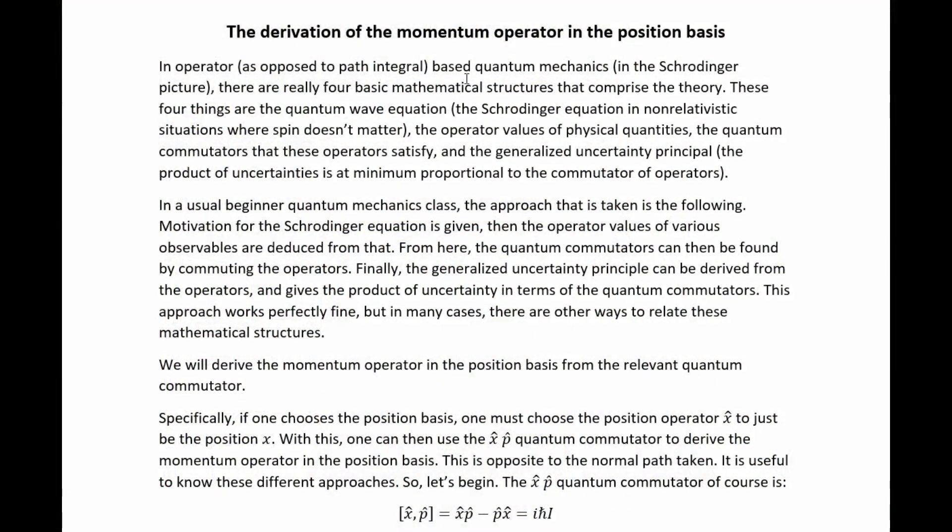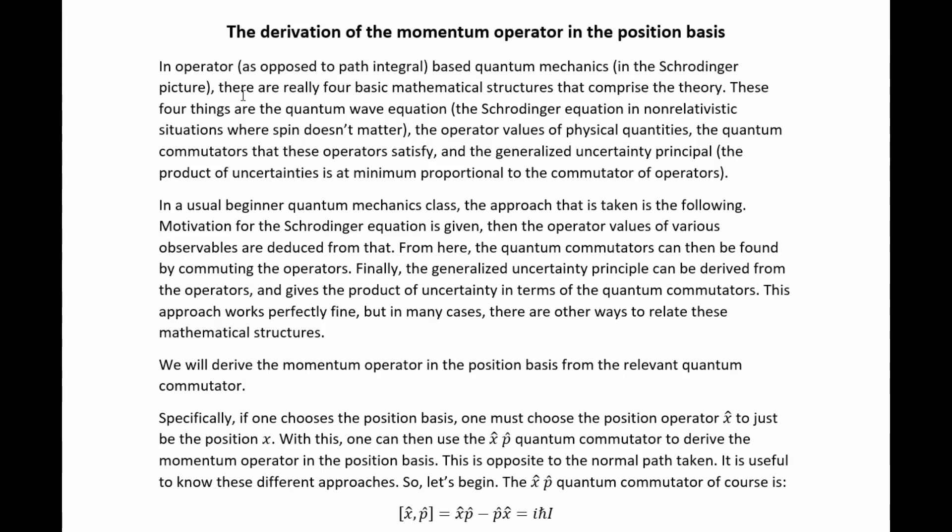So here follows the math section. In operator, as opposed to path integral based quantum mechanics in the Schrodinger picture, there are really four basic mathematical structures that comprise the theory. These four things are the quantum wave equation, the Schrodinger equation in non-relativistic situations where spin doesn't matter, the operator values of physical quantities, the quantum commutators that these operators satisfy, and the generalized uncertainty principle.